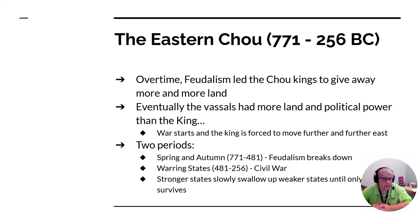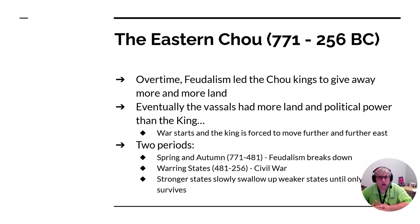That's what happens with the eastern Zhou. Over time, feudalism leads the Zhou kings to give away so much land that they're no longer the most powerful or wealthy. The vassals start to turn on them and there's a long civil war lasting many years. You can break the eastern Zhou dynasty into two parts: the Spring and Autumn period, and then the Warring States period.